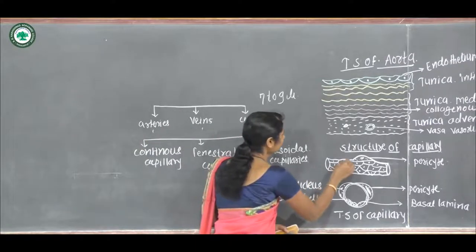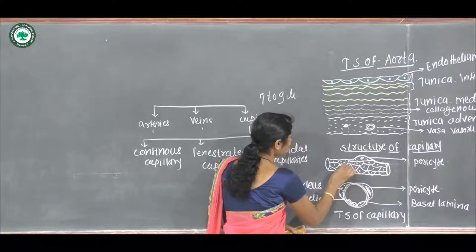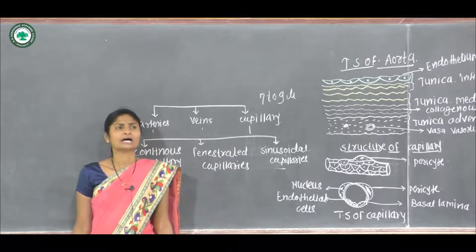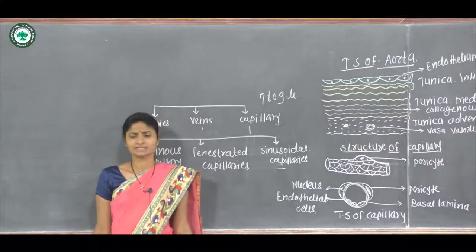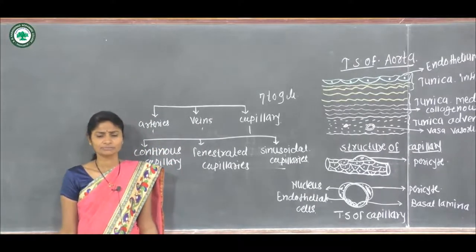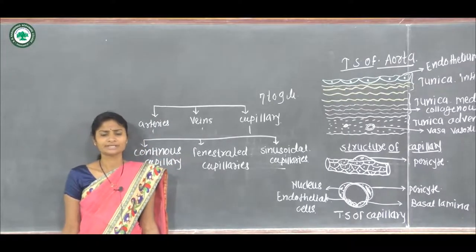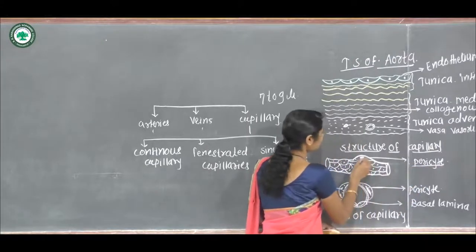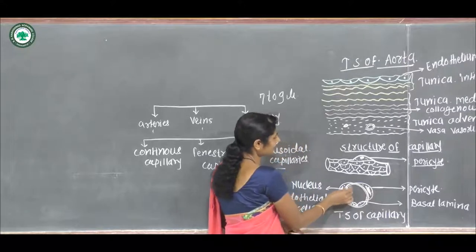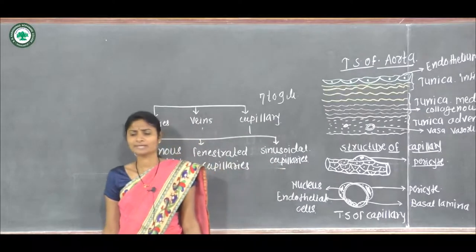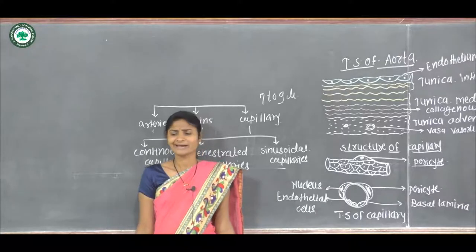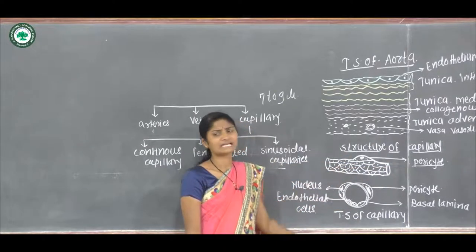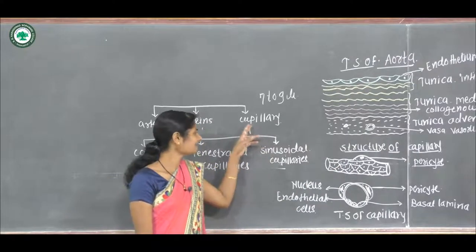The endothelial cells contain usual cell organelles. The cytoplasm contains cell organelles as well as pinocytic vesicles. At some places, special cells called pericytes with multiple processes are associated with the capillaries. As observed in the diagram, pericytes are special cells present in the blood capillaries which give mechanical support to the capillaries and are also phagocytic in function.